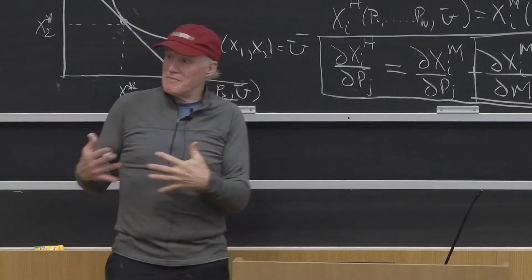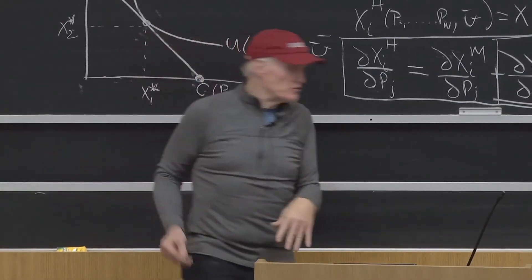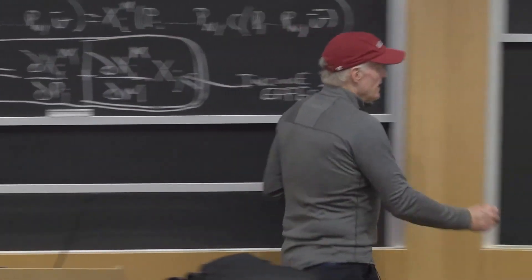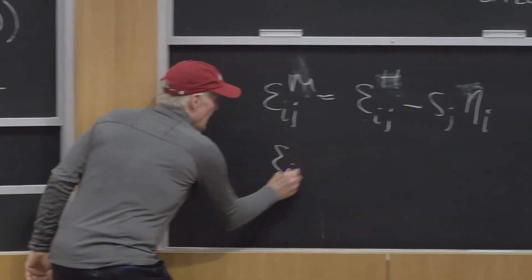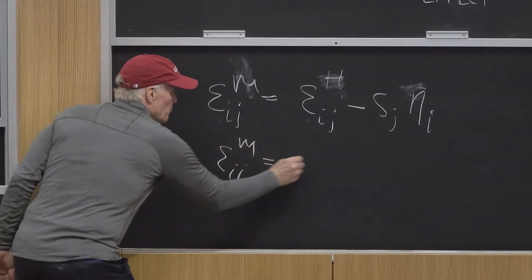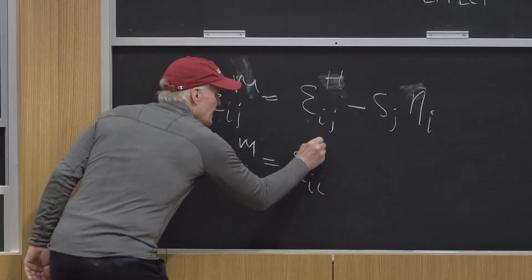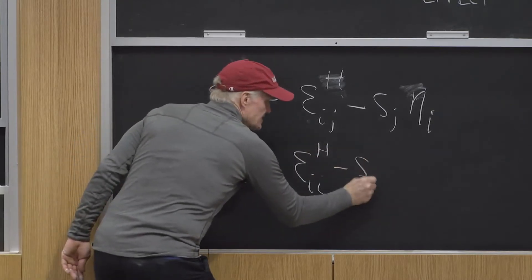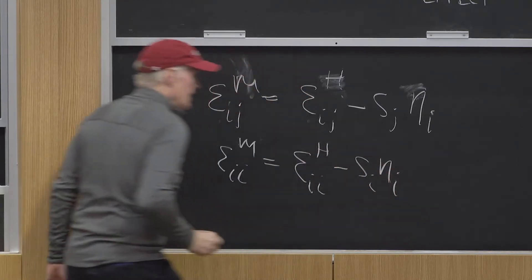Now, this is where the law of demand can run into some problems. Because this implies that epsilon ii M equals epsilon ii H minus si eta i.